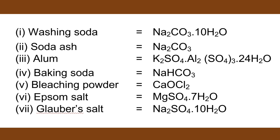Number 1. Washing soda: Na2CO3·10H2O. Soda ash: Na2CO3. Alum: Al2(SO4)3·24H2O.